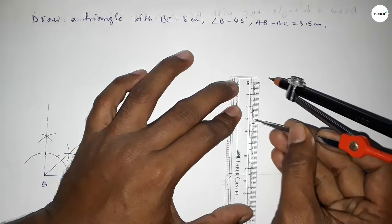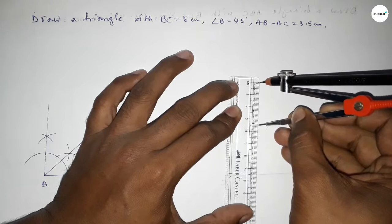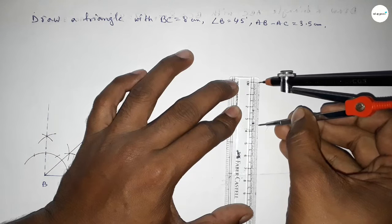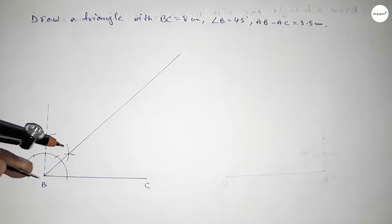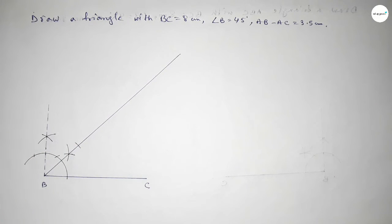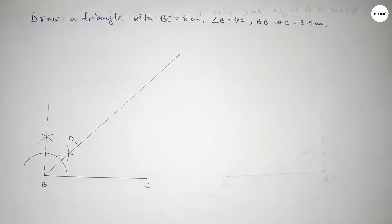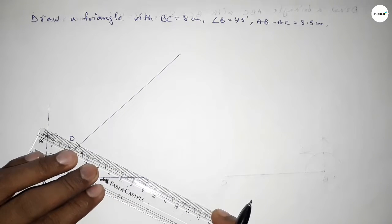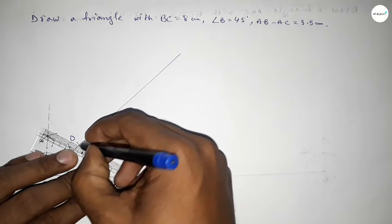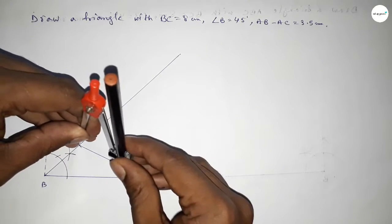Taking a length of 3.5 centimeters using the compass and putting the compass on point B, cutting here and taking here point D. So BD equals 3.5 centimeters. Now joining D and C, and next bisecting DC.